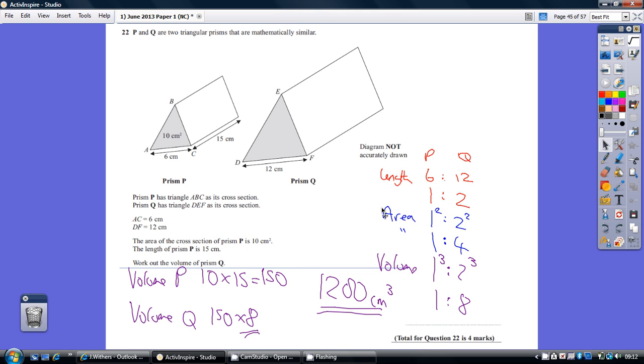Now our area ratio is therefore 1 squared to 2 squared, which is 1 to 4, and our volume ratio is 1 cubed to 2 cubed, which is 1 to 8. So we have three different ratios, the length being 1 to 2, the area 1 to 4, the volume 1 to 8.